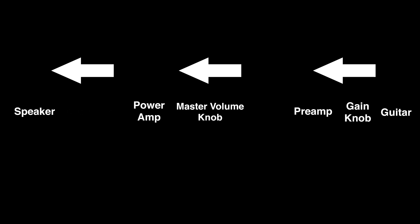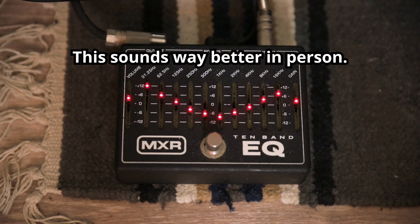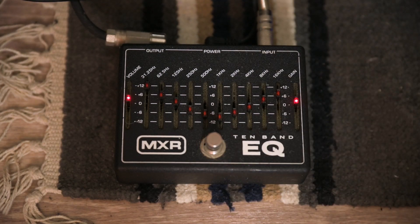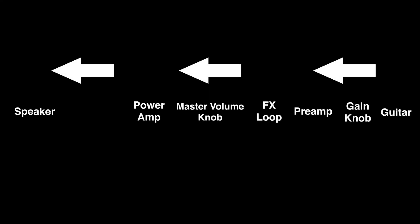Between the preamp and the power amp, many amps also have an effects loop. This allows you to attach pedals to modify the distorted signal of the preamp. I often place an EQ pedal in my effects loop so I can shape the preamp tube distortion after it's created. There are several other effects like chorus and reverb that sound better in the FX loop.